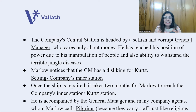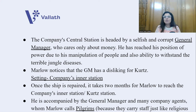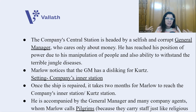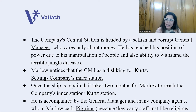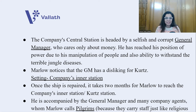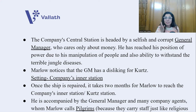The Central Station is headed by a very selfish and corrupt general manager who cares only about money. He reached his position of power through manipulation of people and his ability to withstand the terrible jungle diseases. Marlow notices that the general manager has a strong disliking for Kurtz — a contrast to the chief accountant, who had greatly admired him.